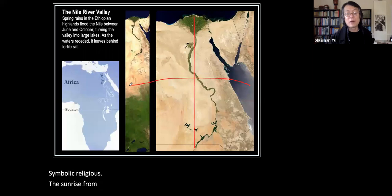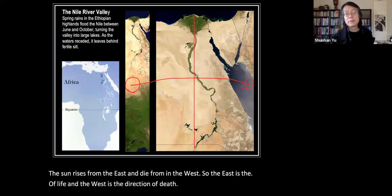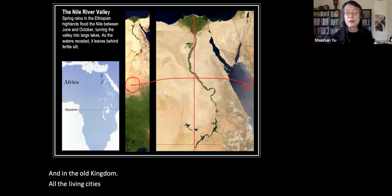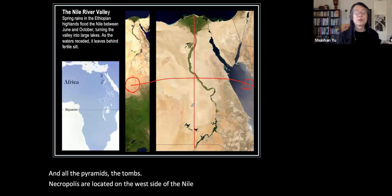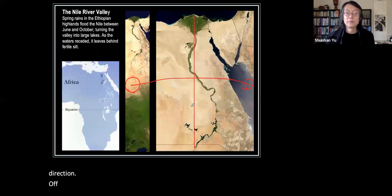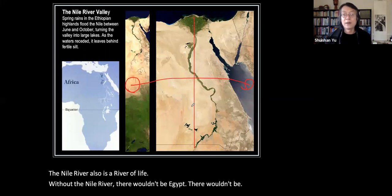The sun rises from the east and sets in the west, so east is the direction of life and west is the direction of death. In the Old Kingdom, all living cities were located on the east side of the Nile, and all the pyramids, tombs, and necropolises were located on the west side — the direction of death and afterlife. The Nile river is truly a river of life.